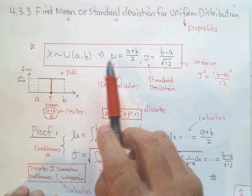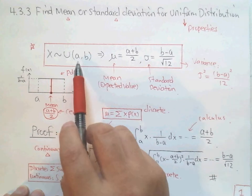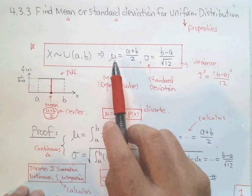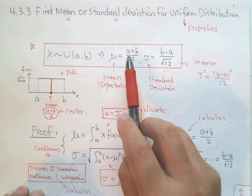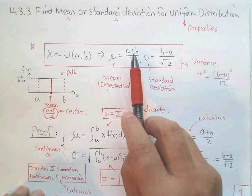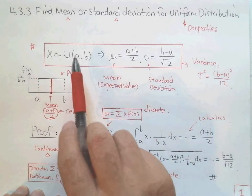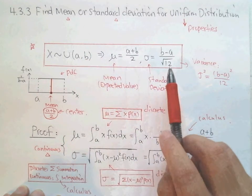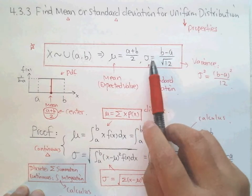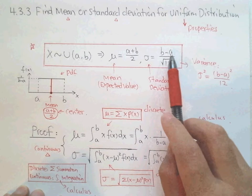Here I'll show you directly the formula. If X follows uniform distribution from A to B, the mean, remember we use μ, is half of the sum of A and B, which means it's the middle point or the average of A to B. What is the standard deviation? Sigma is this fraction B minus A over square root of 12.